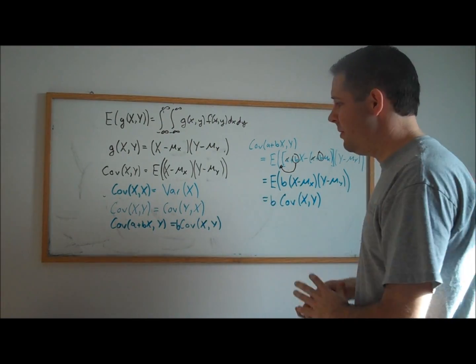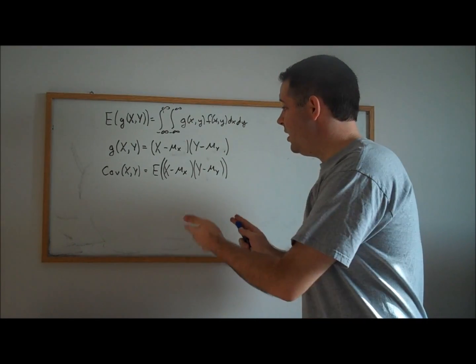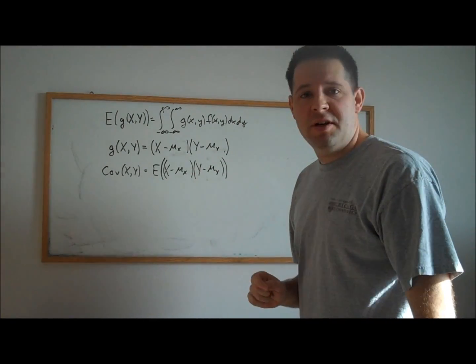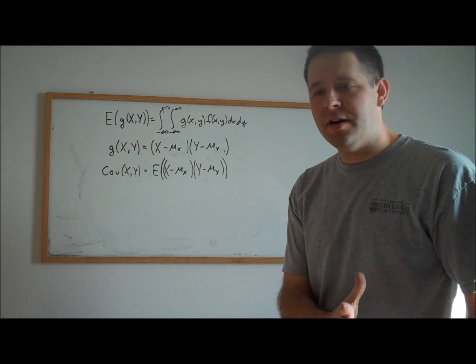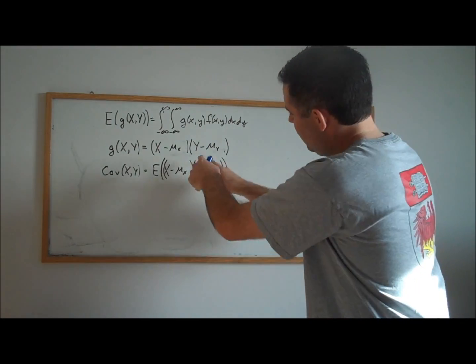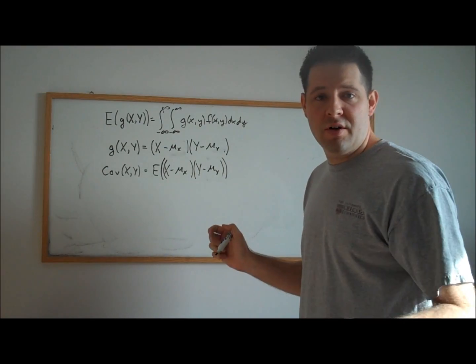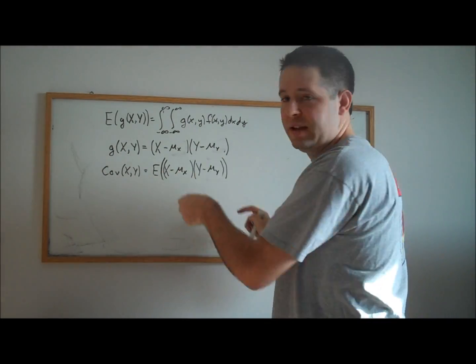A final nice property is the computational form for covariances. Just like the computational form for variances, the computational form for covariances comes from multiplying out the terms inside this expectation. We're going to use FOIL: first, outer, inner, and last.